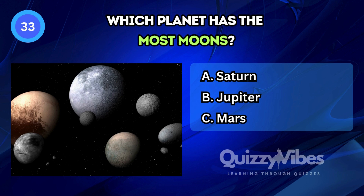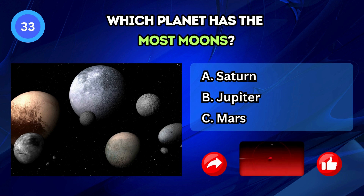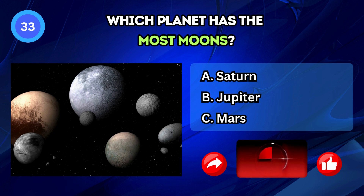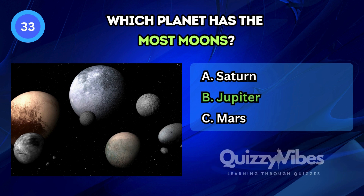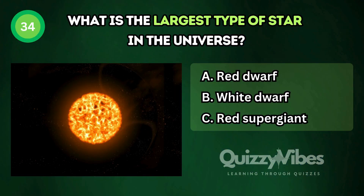Which planet has the most moons? Answer B, Jupiter. What is the largest type of star in the universe?